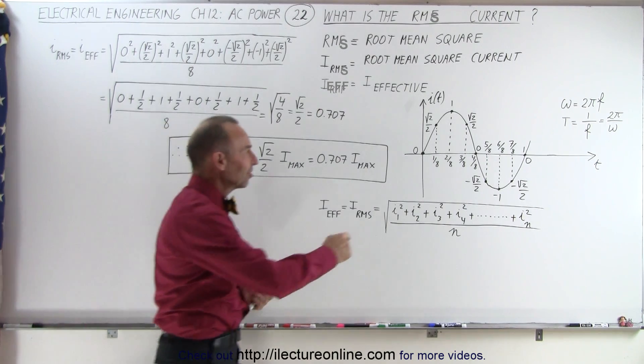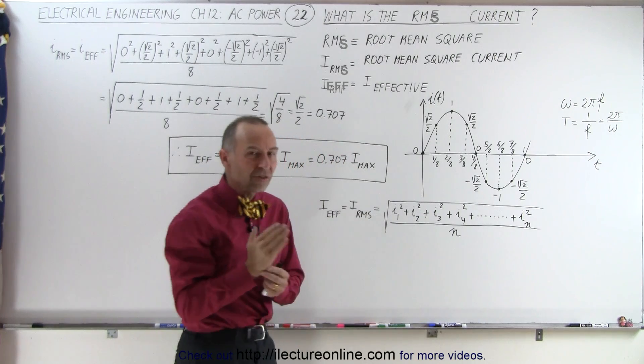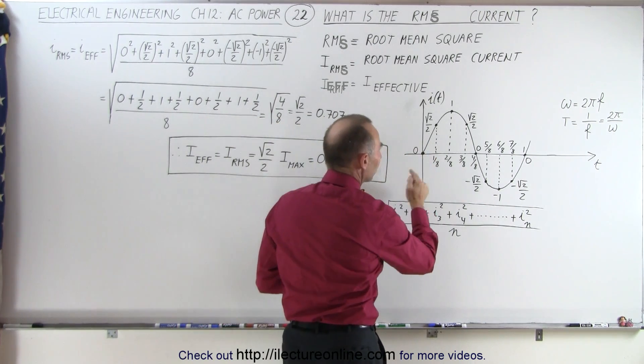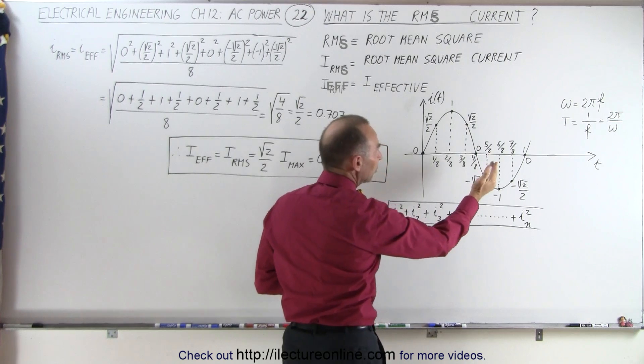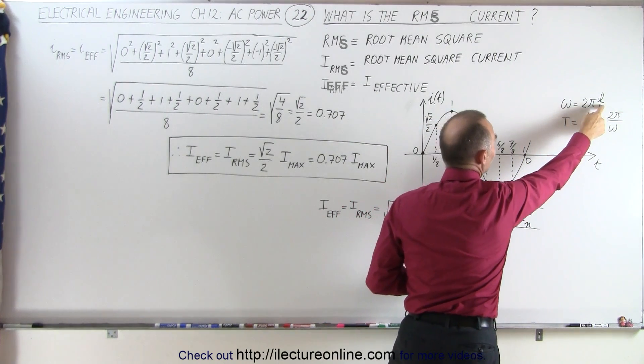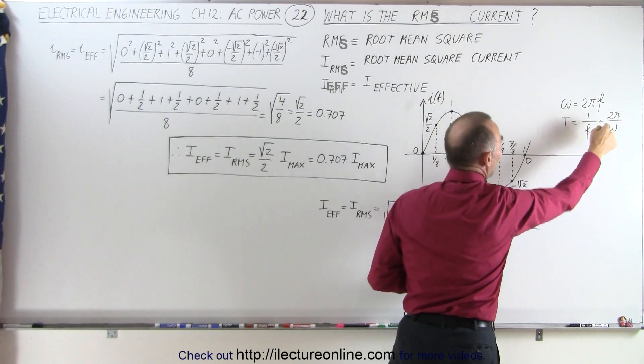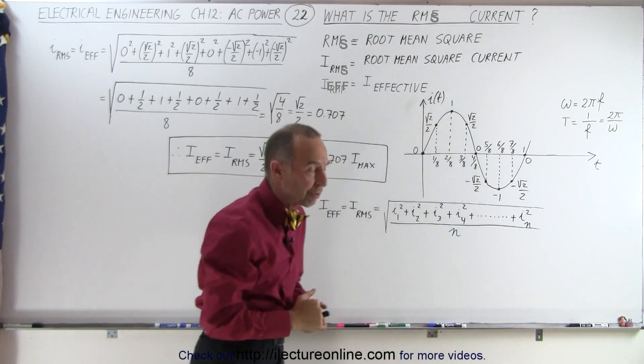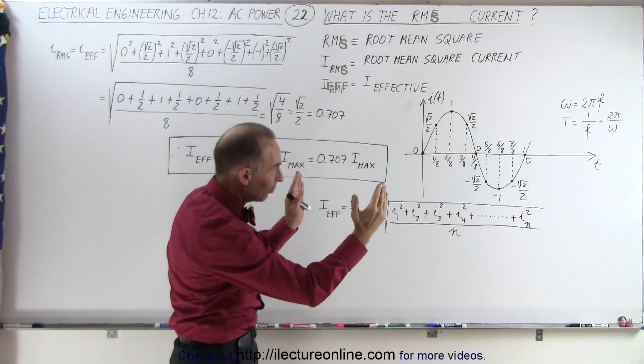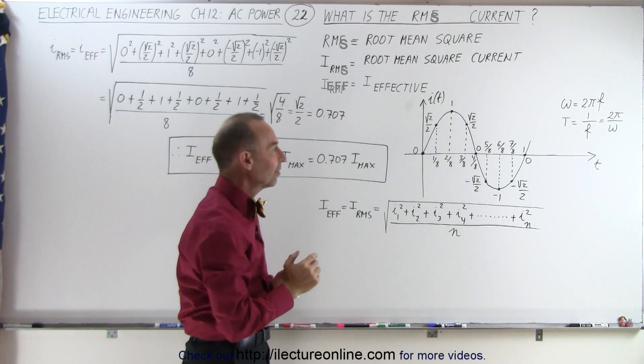So let's say we have a simple sinusoidal current like this, and let's say that we're going to sample that current at regular intervals. At 1/8 of a period, notice that the angular frequency of the current is equal to 2π times the frequency, and the period is 1 over the frequency, such that it's 2π over ω, the angular frequency. So we take the period of one cycle of the current, and we snip it into eight equal pieces.